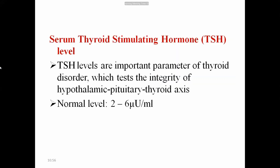The estimation of serum TSH level is an important parameter for thyroid disorders, testing the integrity of the hypothalamic-pituitary-thyroid axis. The normal TSH level is 2 to 6 micro units per ml. This test is widely performed in hospitals as a single test to distinguish whether a person is in a hyper-, hypo-, or normal thyroid state.